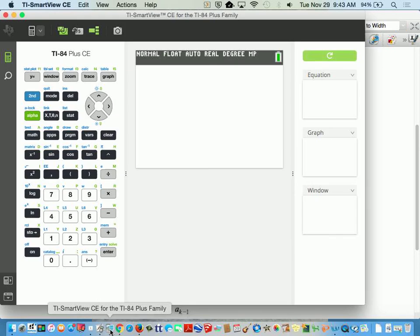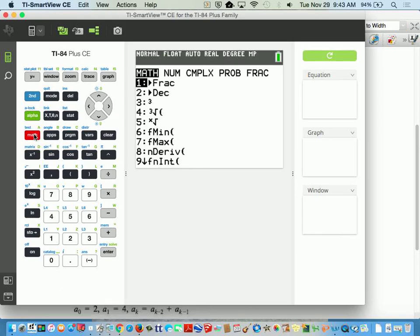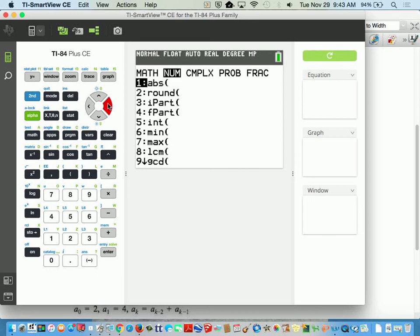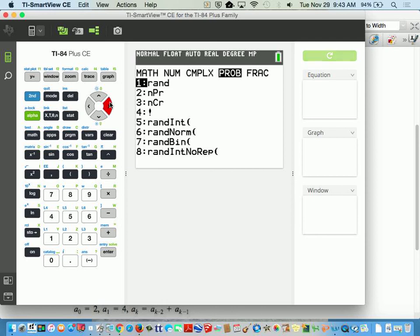But remember, on the calculator, you're going to go into math. So we hit the math button, slide over to what's called the number complex, probabilities, and if you see number 4, it has an exclamation point.